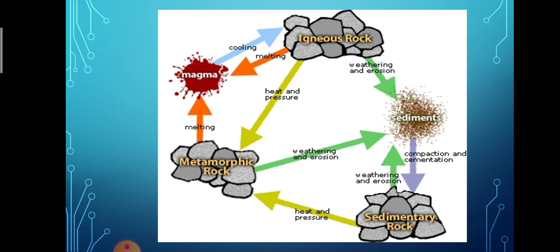Igneous rocks are formed first; after being broken down by natural processes such as weathering and erosion, deposited and compacted sediments form sedimentary rocks. After being subjected to great heat and pressure, igneous and sedimentary rocks are transformed into metamorphic rocks. Sedimentary rocks may be buried and melted due to heat from the interior of the earth, forming magma. Metamorphic rocks may also be broken down into sediments through natural processes, later forming sedimentary rocks or buried again to form magma. Thus, a cyclical relationship exists between the three rock groups, and this entire process is known as the rock cycle.